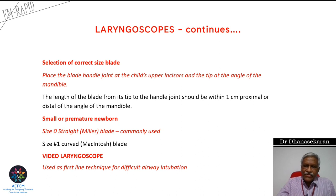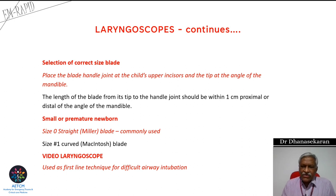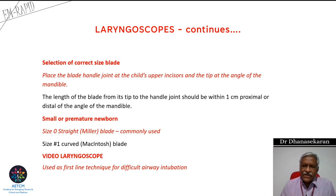The straight blade is used in older children. The advantage of the Miller blade is that it is thin, helping to push the larger tongue aside for visualization. Another purpose is that the epiglottis in this age group is long and may obscure the glottic opening. Passing the straight blade under the epiglottis and lifting it allows clear visualization.